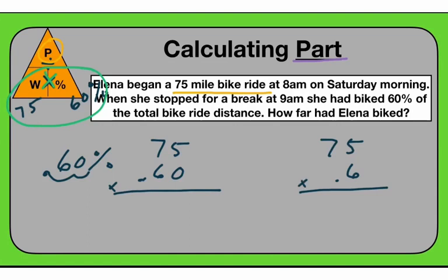Then we multiply to get our answer. Zero times five is zero, zero times seven is zero. Then the six: six times five is 30, put the zero and carry the three. Seven times six is 42, plus three is 45. So it looks like we get 44,500 — but remember our decimal place. Our decimal is two places over, so I come back two places, which makes my answer 45.